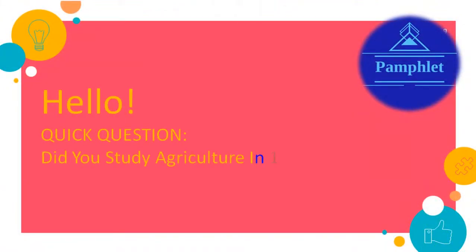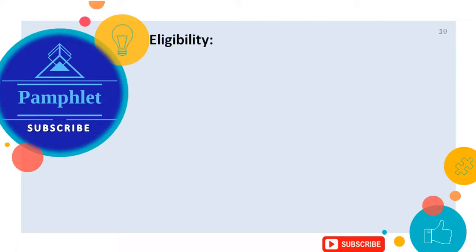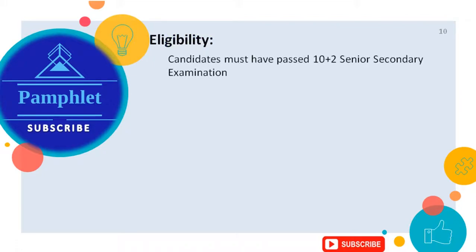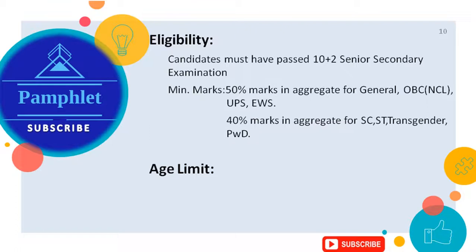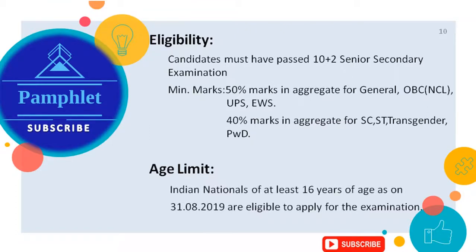Quick question: did you study agriculture in 10+2? Candidates must have passed the 10+2 senior secondary examination. Minimum marks: 50% in aggregate for unreserved categories, and 40% in aggregate for reserved categories. Age Limit: Indian Nationals of at least 16 years of age as on August 31, 2019 are eligible to apply for the examination.